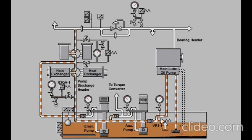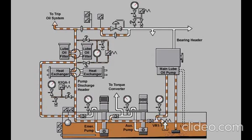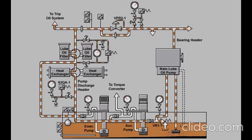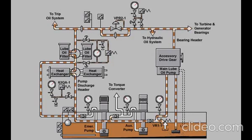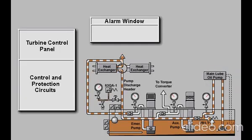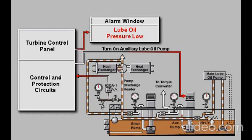Lube oil is cooled, filtered, and a portion is sent to the trip oil system. The remainder flows to the bearing header. VPR 2-1 maintains oil pressure in the bearing header at approximately 26 PSI. The bearing header then supplies filtered lube oil to the hydraulic oil system, the accessory drive gear, and the turbine and generator bearings. Should the lube oil pressure in the pump discharge header drop below 70 PSI, pressure switch 63QA-1 will initiate an alarm and activate the auxiliary lube oil pump. The auxiliary pump will remain on until it has been manually shut off at the motor control center.